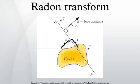Concretely, for the two-dimensional Radon transform, the dual transform is given by. In the context of image processing, the dual transform is commonly called back projection as it takes a function defined on each line in the plane and smears or projects it back over the line to produce an image.